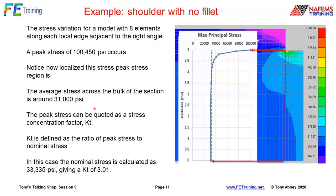The average stress is 31,000 PSI — the nominal stress calculated as force over area, the stress flowing through the net section without influence of the stress raiser. KT, the stress concentration factor, is the ratio of peak to nominal stress, giving about 3. That's not outrageous — an infinite plate with a hole gives a theoretical KT of 3. But the trouble is we really don't know what the stress level is locally at that point. The steepness of that curve is what we'll be calling the power of the singularity.